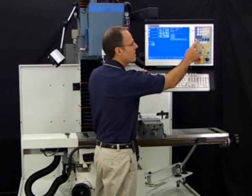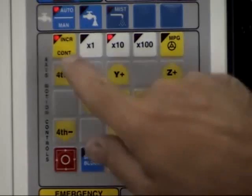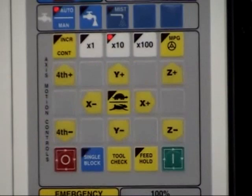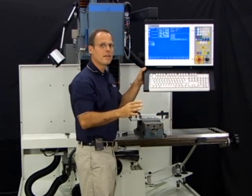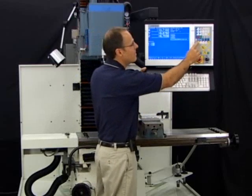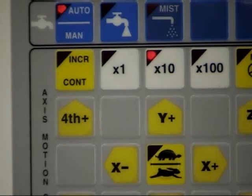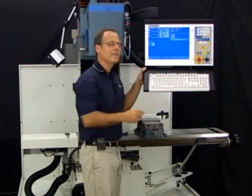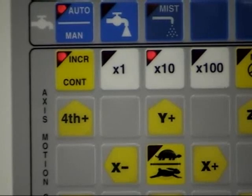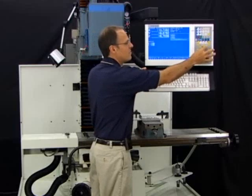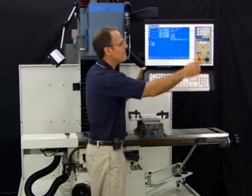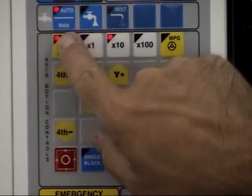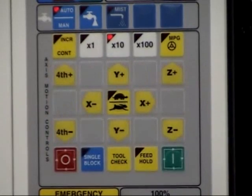You can switch between continuous mode and incremental mode right here with this button. Notice there's a light. It's a dual-function button. When the light is lit, the word beside that light is the mode that button is in. Right now the light's lit and the word beside it is incremental, so I'm in incremental mode. You can see every time I hit the button it's moving a thousandth at a time. I'm going to switch over to continuous by hitting that button and the light goes out. Now we're in continuous mode.